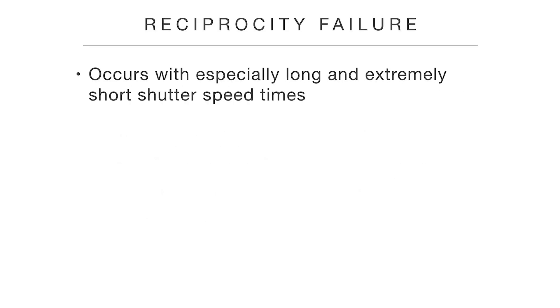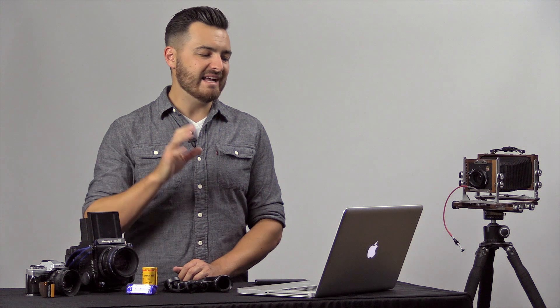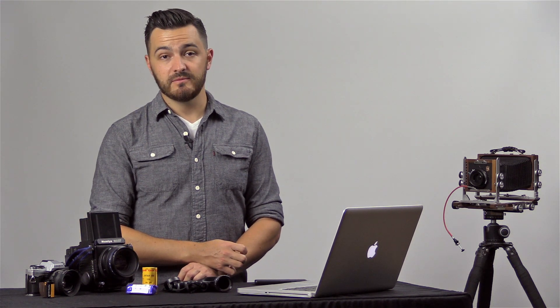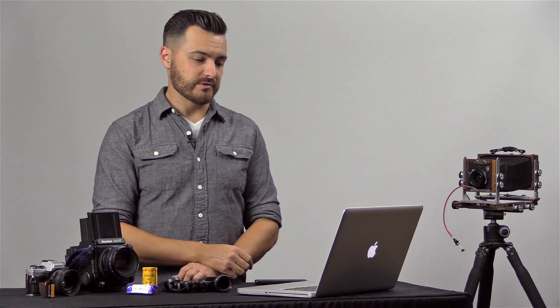Reciprocity failure occurs with especially long and extremely short shutter speeds. Multiple seconds, multiple minutes — that's when reciprocity failure really rears its ugly head. It can also happen at extremely short shutter speeds like one four-thousandth or one eight-thousandth of a second, though that's much less common. Most modern films can handle quick shutter speeds no problem, but longer shutter speeds are definitely still an issue, so let's concentrate on the long exposures.